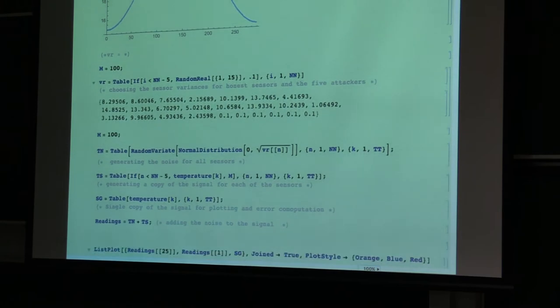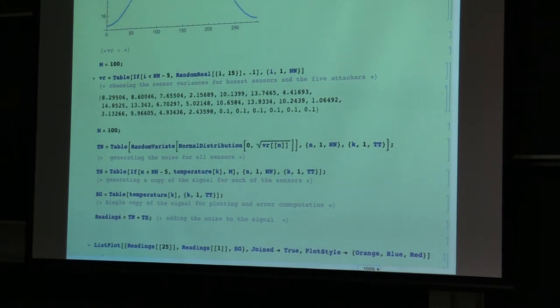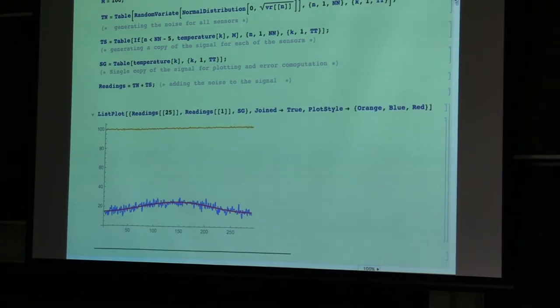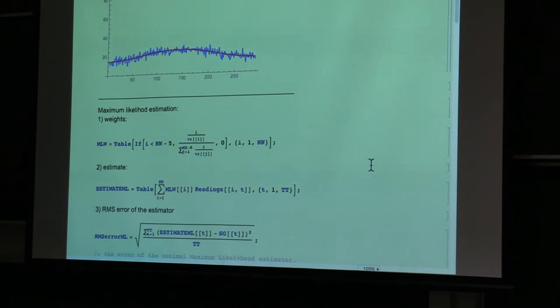A simple attack would be this. You have here 20 legitimate sensors and 5 sensors that are outliers. And you can see here on this plot, these are the measurements of the outliers. So 5 sensors send readings of 100 and the others send readings just with stochastic errors. So let's see how well the system, the trip algorithms perform.